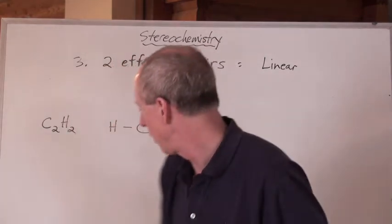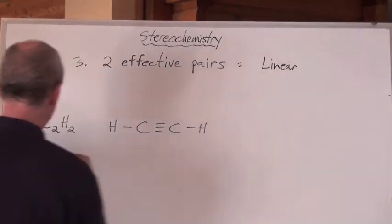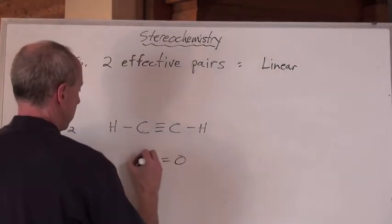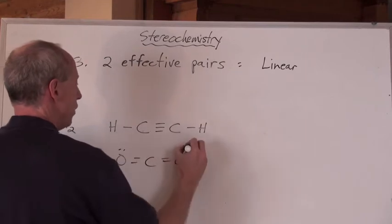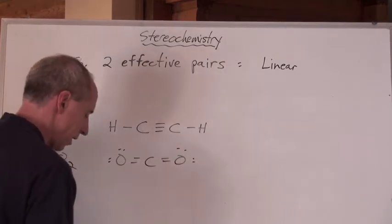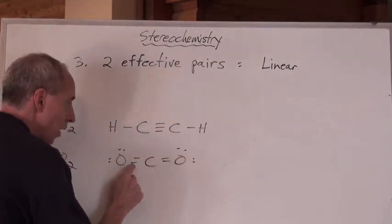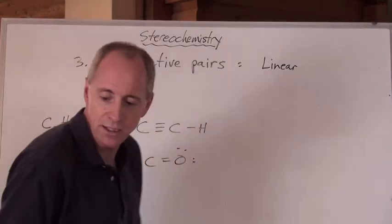Now, another classic one for this shape is CO2, which is carbon dioxide, which we've done this a couple of times already. That's the Lewis diagram for carbon dioxide. The carbon in the middle, there's only one central atom, one, two effective pairs. It's got to be linear.